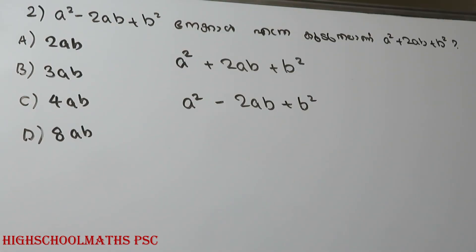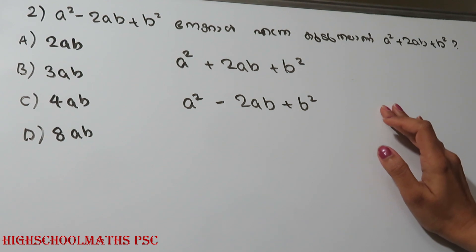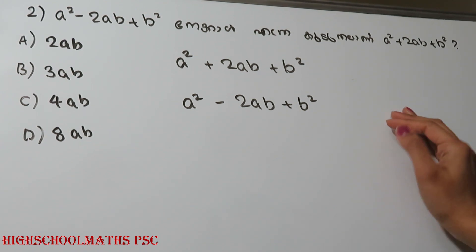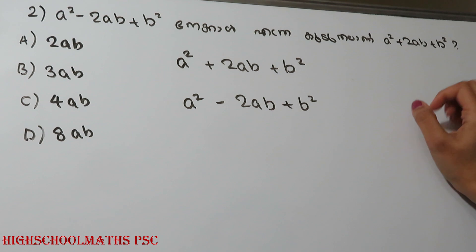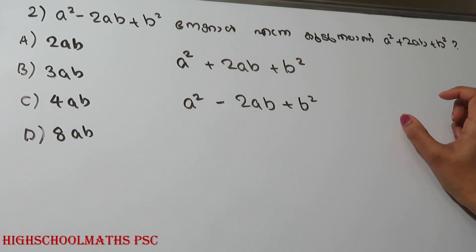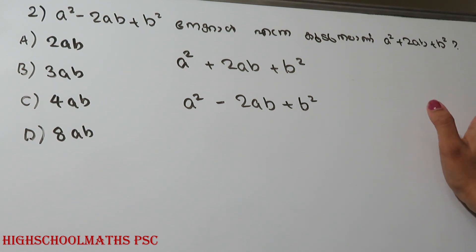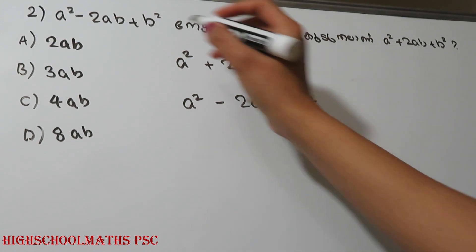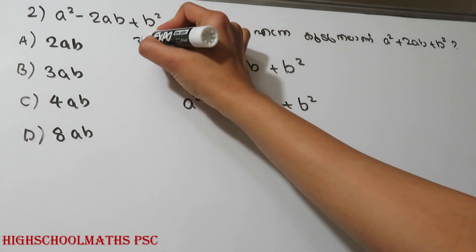This is a² minus 2ab plus b². This is a² plus 2ab plus b². How much more is a² plus 2ab plus b² than a² minus 2ab plus b²? The options are 2ab, 3ab, 4ab, and 8ab.